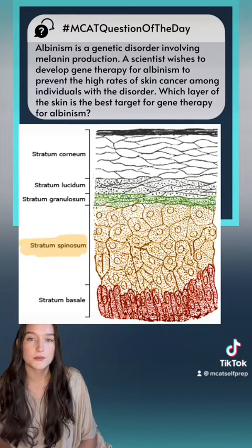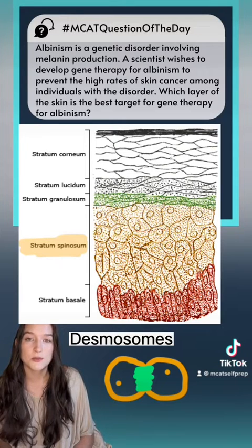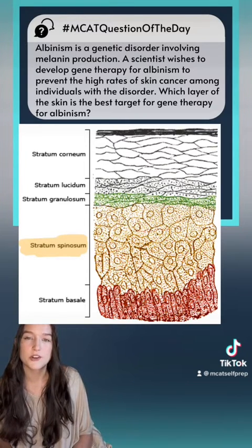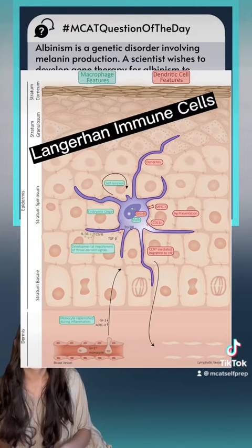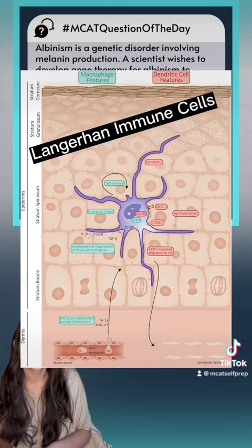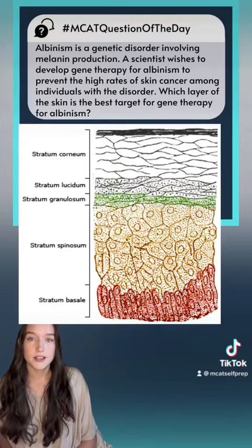The next layer is the stratum spinosum. In this layer, desmosomes form between keratinocytes. The cells start to lose water, creating a spiny look, which is where the name comes from. This is also where Langerhans immune cells are found.